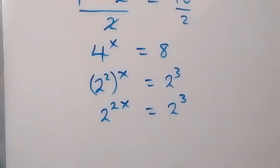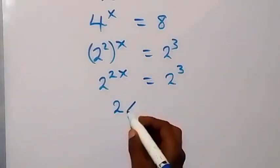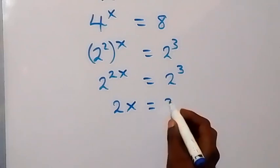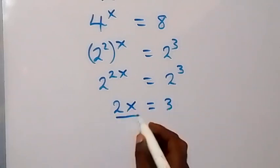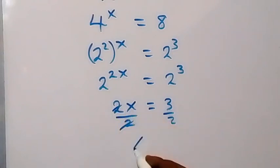Now we have the same base, then we can equate the powers and we have 2x now equals 3. Then divide both sides by 2. Two cancels 2, and we have x equals 3 over 2.